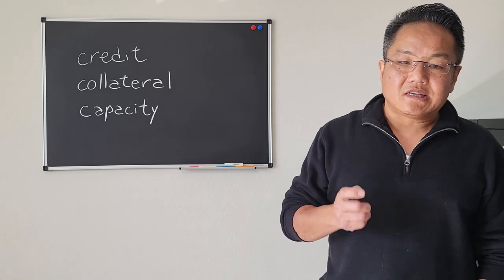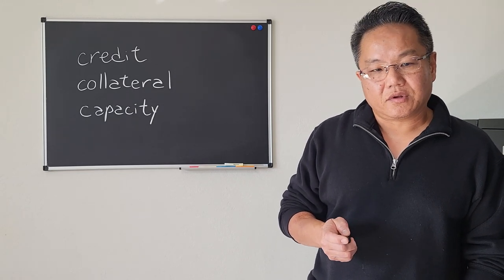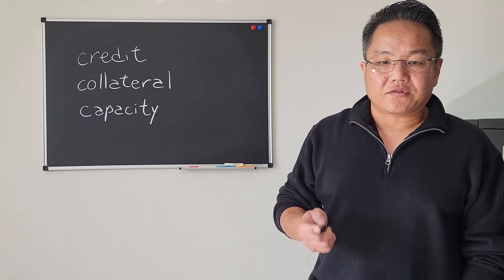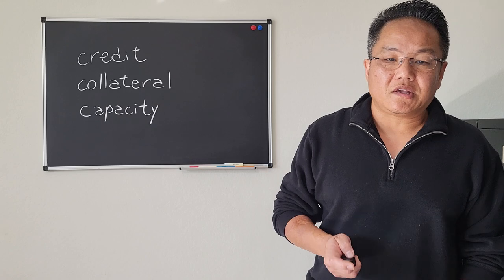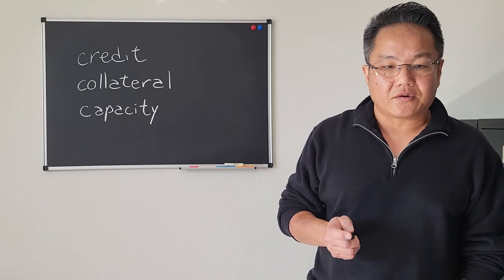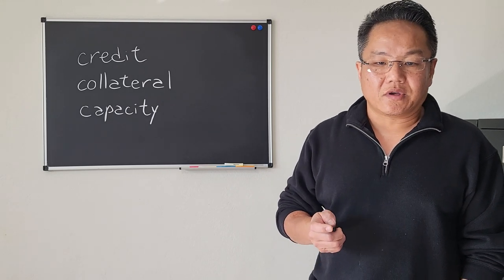Collateral is essentially the value of the thing that you are putting up for the loan. So in the case of mortgages, it's always the value of the house versus how much you are borrowing against it. We in the industry calculate this in a percentage that we call LTV or loan to value ratio. The higher the LTV, typically the more expensive the loan gets.